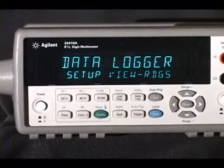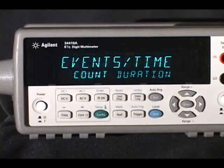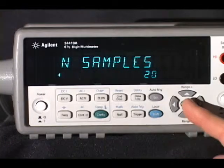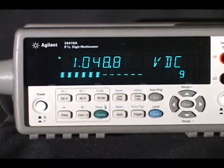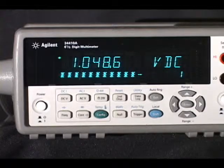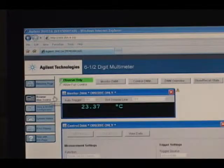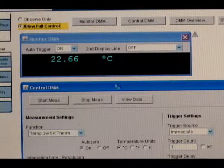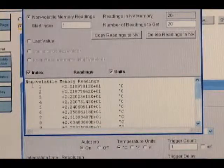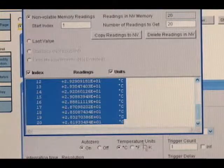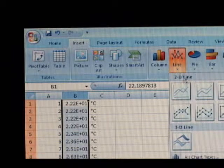One additional feature is very useful on the bench: data logging. Using the self-guided menu, you can easily set the 34410A to measure a number of samples over a few minutes or over a few days. Captured data can be read back from the front panel or transferred to a computer for later analysis and display. In this case, a temperature profile was made using a simple thermistor and the temperature conversion built into the 34410A.